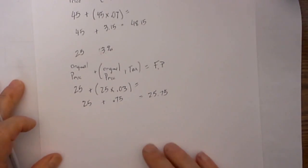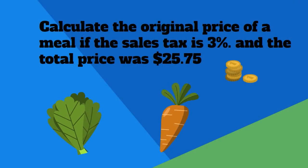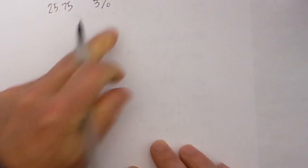On this last one we have a final price. For this last problem we are going to do things a little bit different. We have a final price of $25.75 and we have a 3% sales tax and we want to know what is the original price.